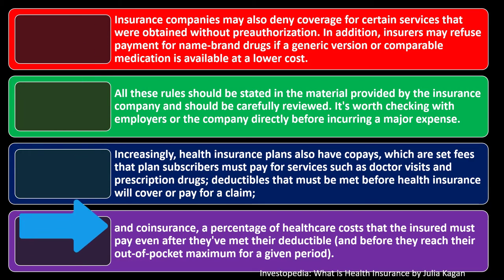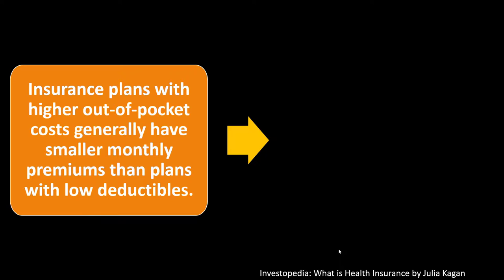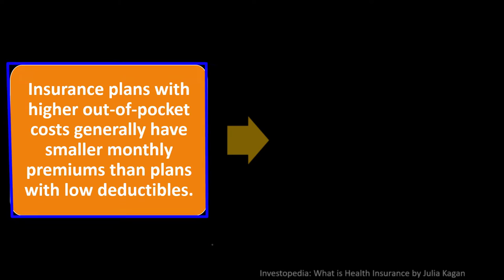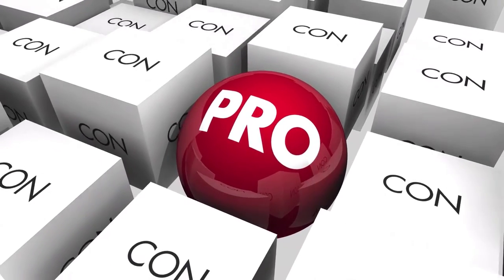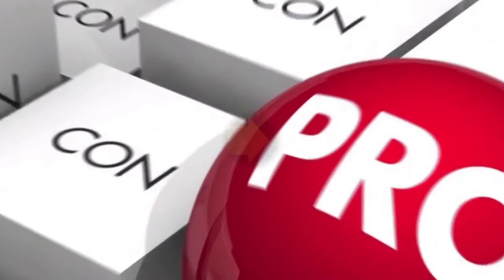Coinsurance is a percent of healthcare costs that the insured must pay even after meeting their deductible, and before they reach their out-of-pocket maximum for a given period. Insurance plans with higher out-of-pocket costs generally have smaller monthly premiums than plans with low deductibles. The interplay between these different components — deductibles, co-pays, coinsurance — affects the cost of the plans in the ways you would expect.